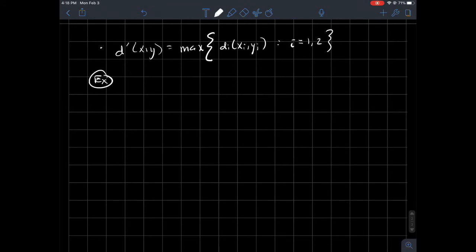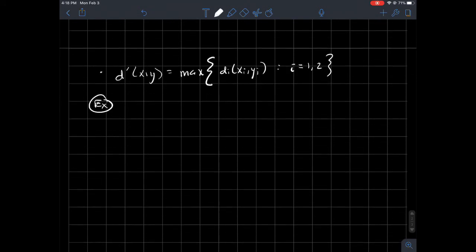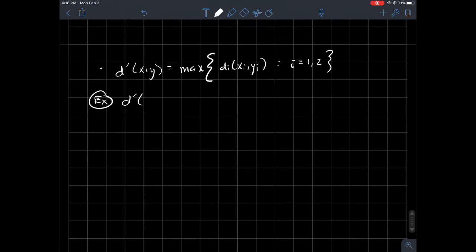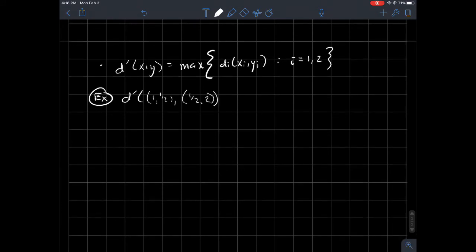And so how would I do maybe a specific example with this? I'll try to just do the same one. That sounds good. So how about D prime of, I think I had something like one, one half, and I think I had one half, two, if I remember correctly. So this should just be the maximum of the following two numbers. So D one of X one, Y one, which is one, one half, or D two, which is, I'm using one half and two now.